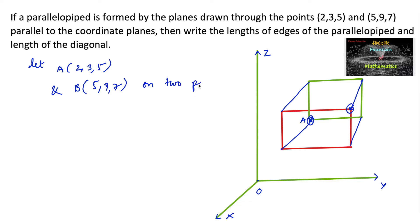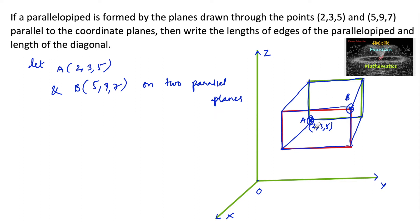We need to find the lengths of the edges of the parallelepiped and the length of the diagonal. Since point A is (2, 3, 5) and point B is (5, 9, 7), we observe the coordinates along each axis. Thinking about the planes through point A and point B, the x-coordinates are x = 2 and x = 5.